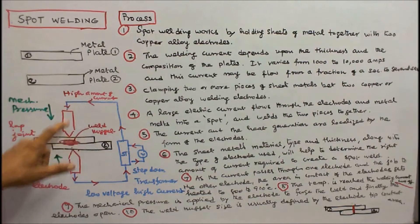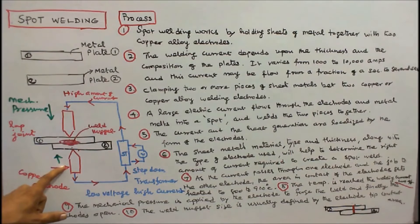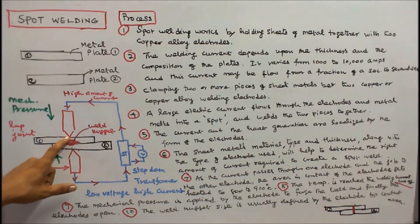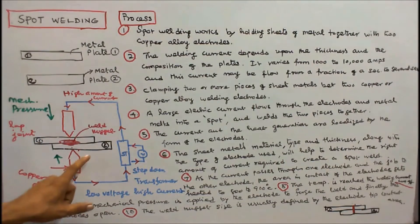As the current passes through one electrode and the job to the other electrode, the area in contact of the electrodes gets heated to 800 to 900 degrees centigrade. Once the temperature is reached, the welding current is cut off.